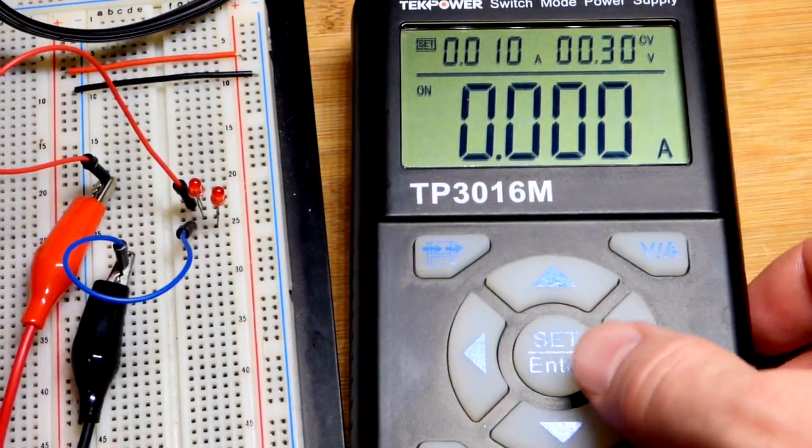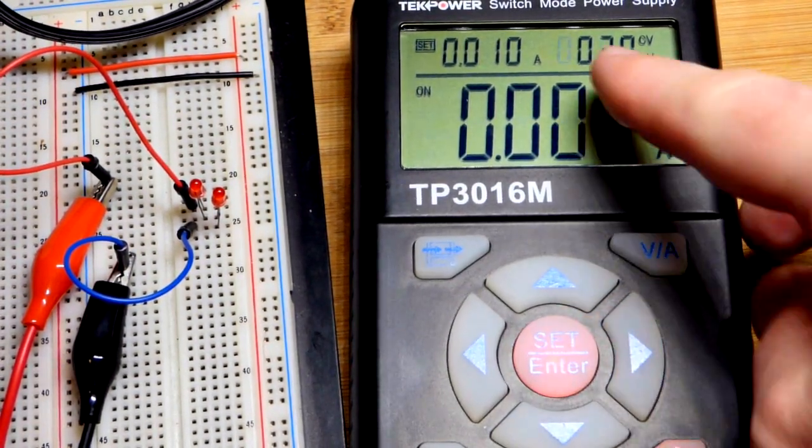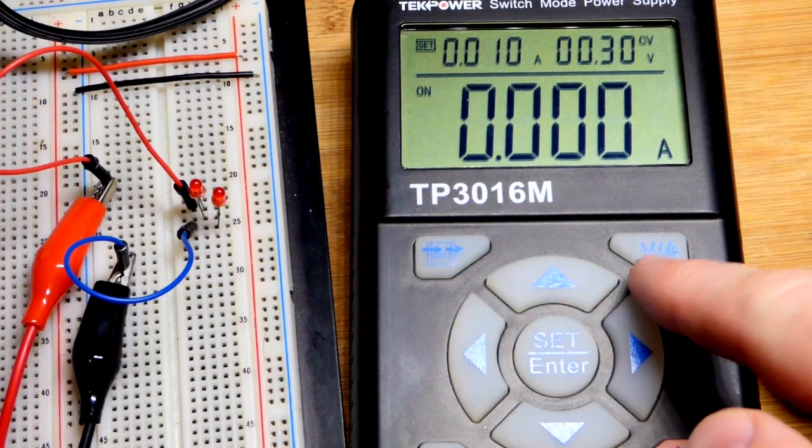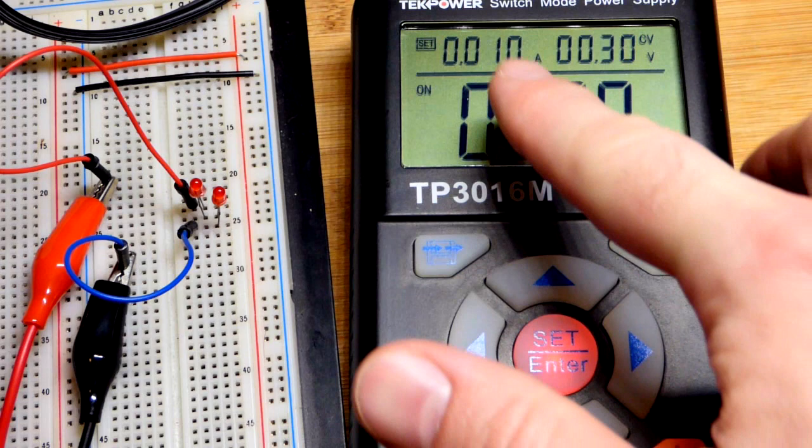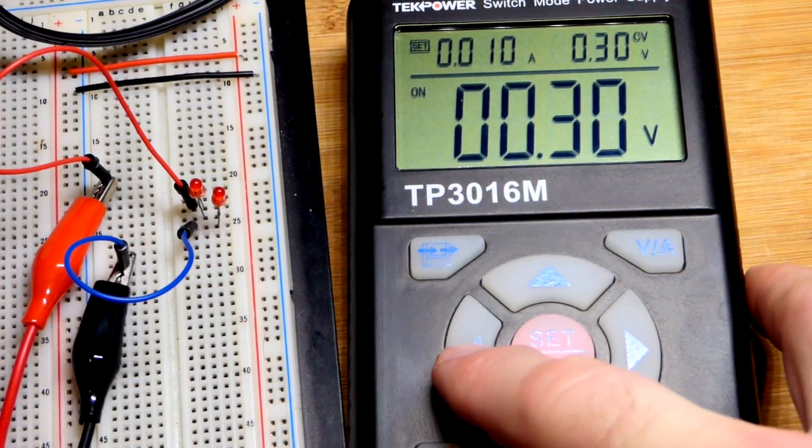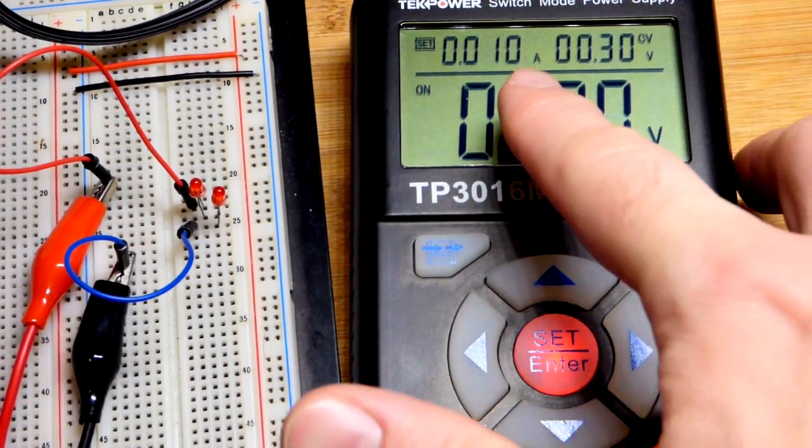So I'm going to hit set and we go up there and hit set again. We could look at the voltage there, and I have the current limited to 10 milliamps of current.